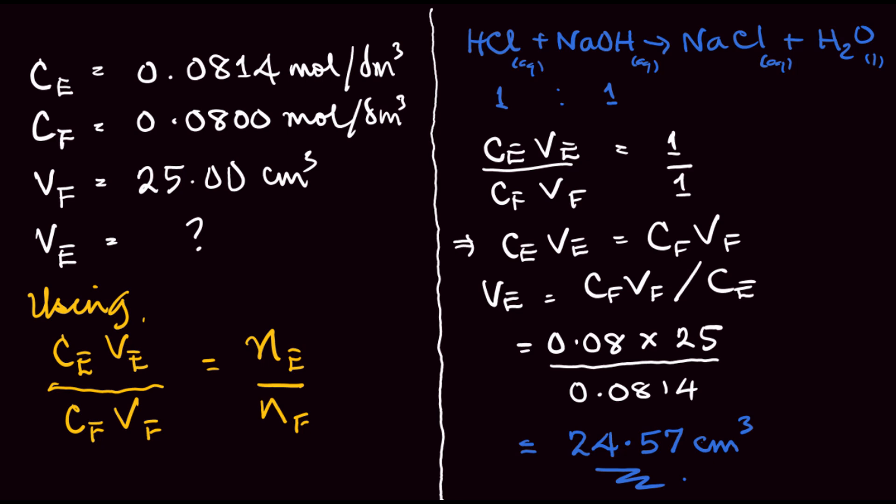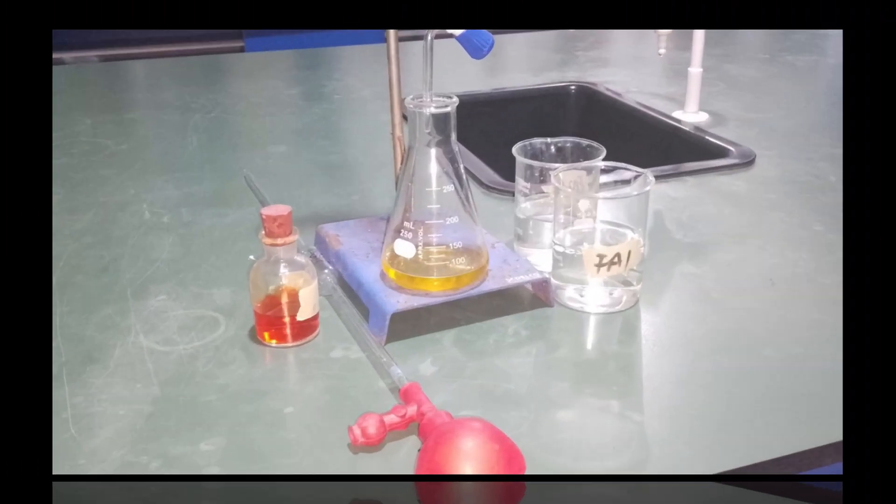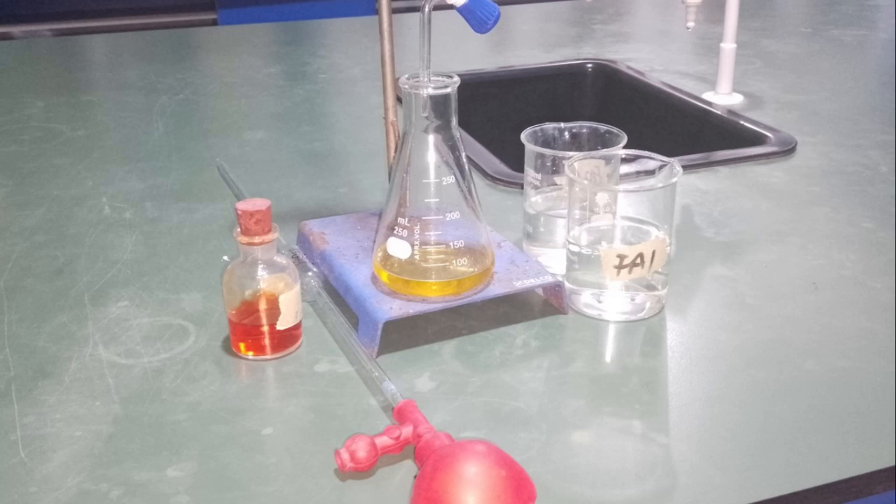That gives us the theoretical titre value for the volumetric analysis of the acid-base titration in Alternative B — approximately 24.57 cm³. Since you may not be using the exact same grades of chemicals, you don't have to get exactly this value. Just ensure your measurements are accurate and you don't overshoot your endpoint. The value is close to 25 cm³ because the acid concentration is slightly higher than the base concentration.